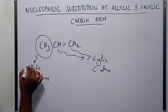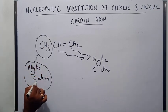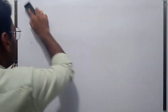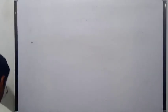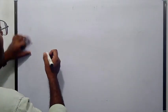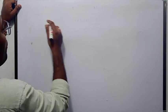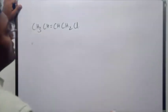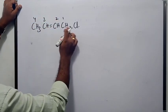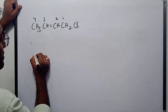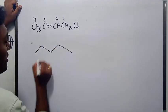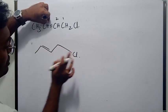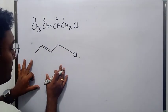Now we will discuss nucleophilic substitution reaction at the allylic carbon atom. To do this, let me take the example of 1-chloro-2-butene. This can be written as CH₃–CH=CH–CH₂Cl. I am going to react it with a nucleophile.